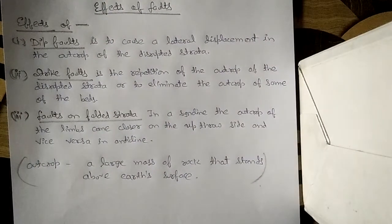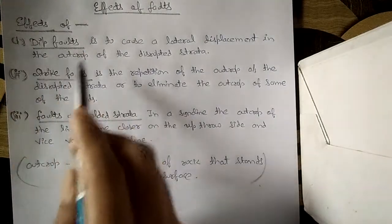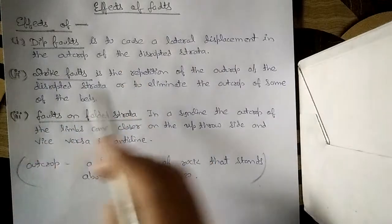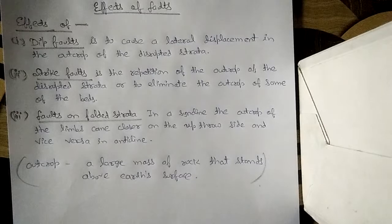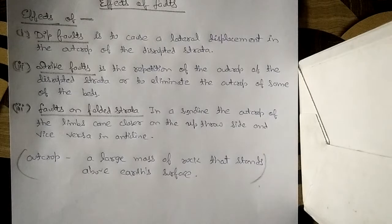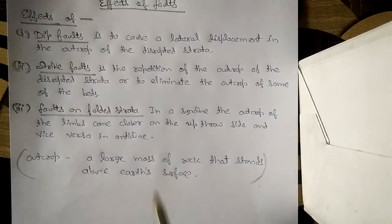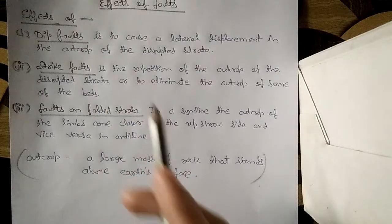In this video we are going to learn about the effects of faults. The first effect of a fault is to cause a lateral displacement in the outcrop of the disrupted strata. First, let's learn what an outcrop is — an outcrop is a large mass of rock that stands above the earth's surface, an upstanding structure at the earth's surface.